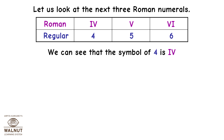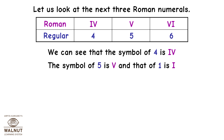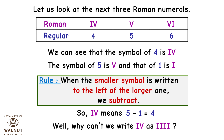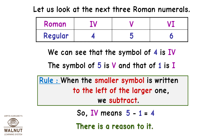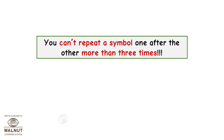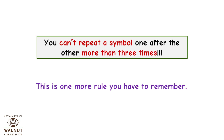We can see that the symbol of 4 is IV. The symbol of 5 is V and that of 1 is I. Rule: when the smaller symbol is written to the left of the larger one, we subtract. So IV means 5 minus 1, which is equal to 4. Why can't we write 4 as I I I I? There is a reason: you cannot repeat a symbol one after the other more than 3 times.